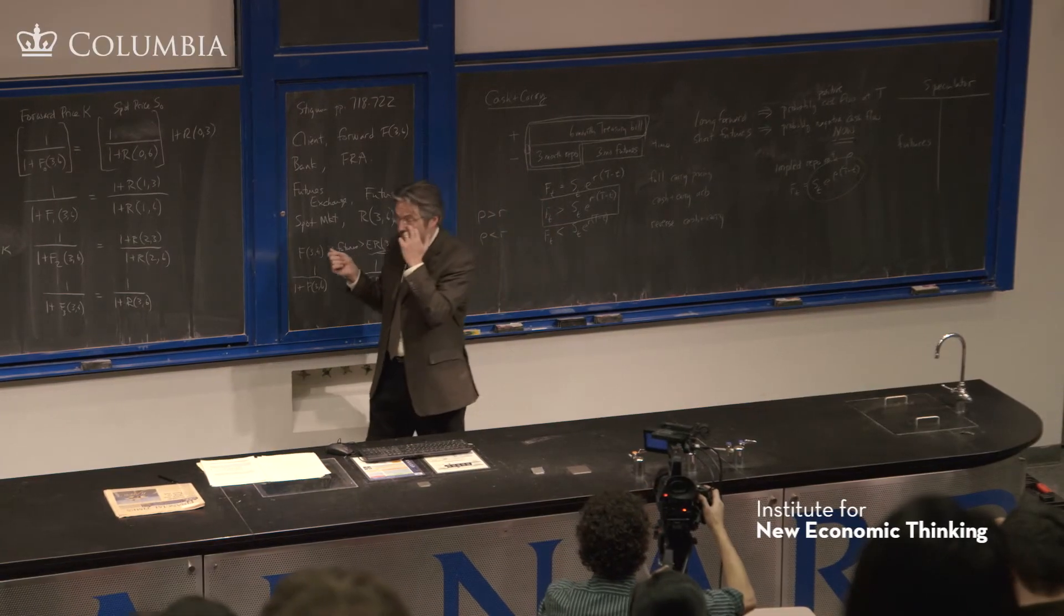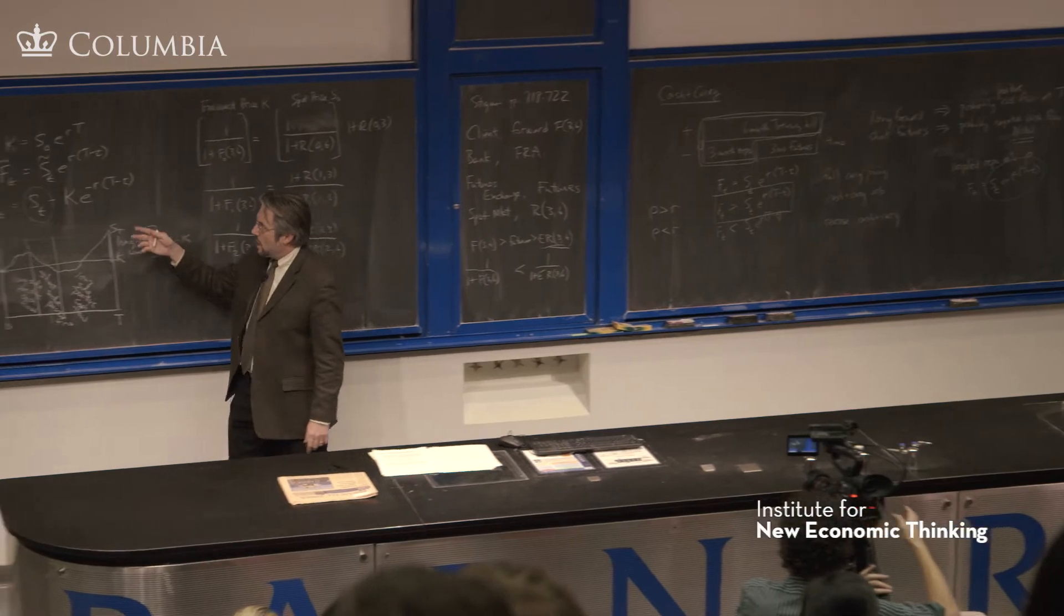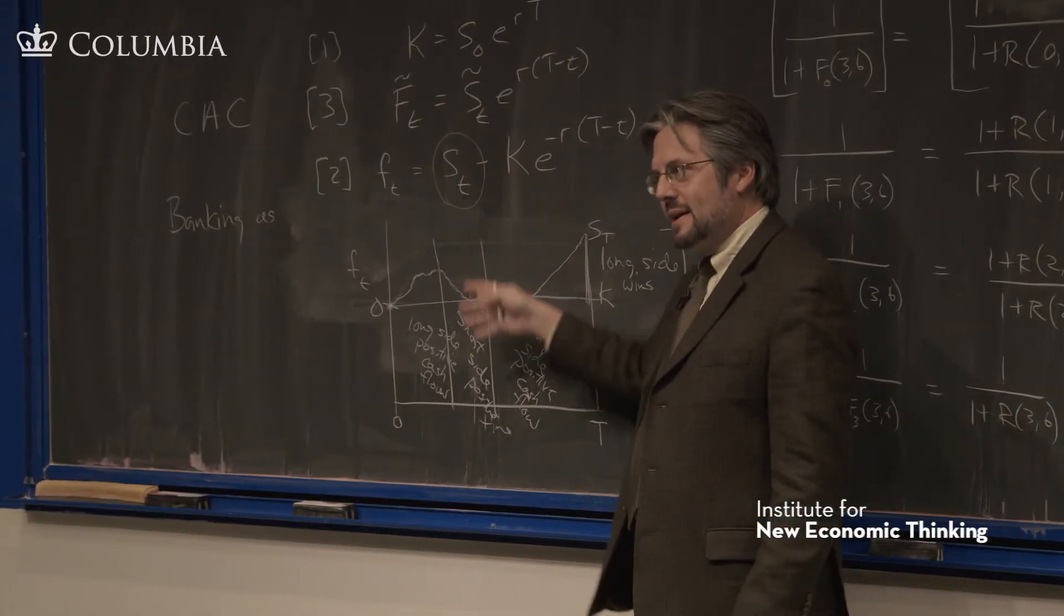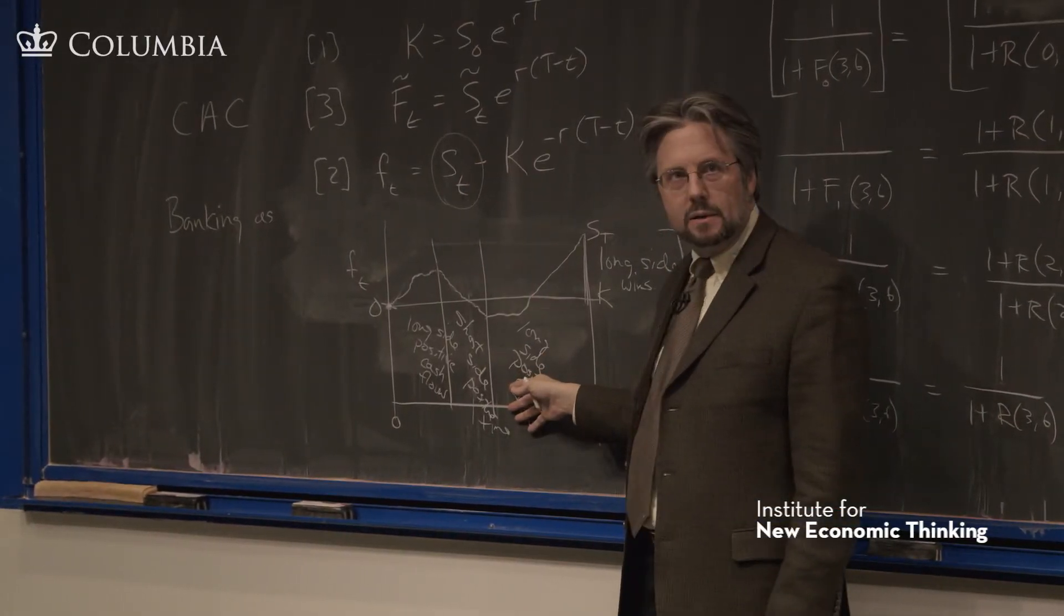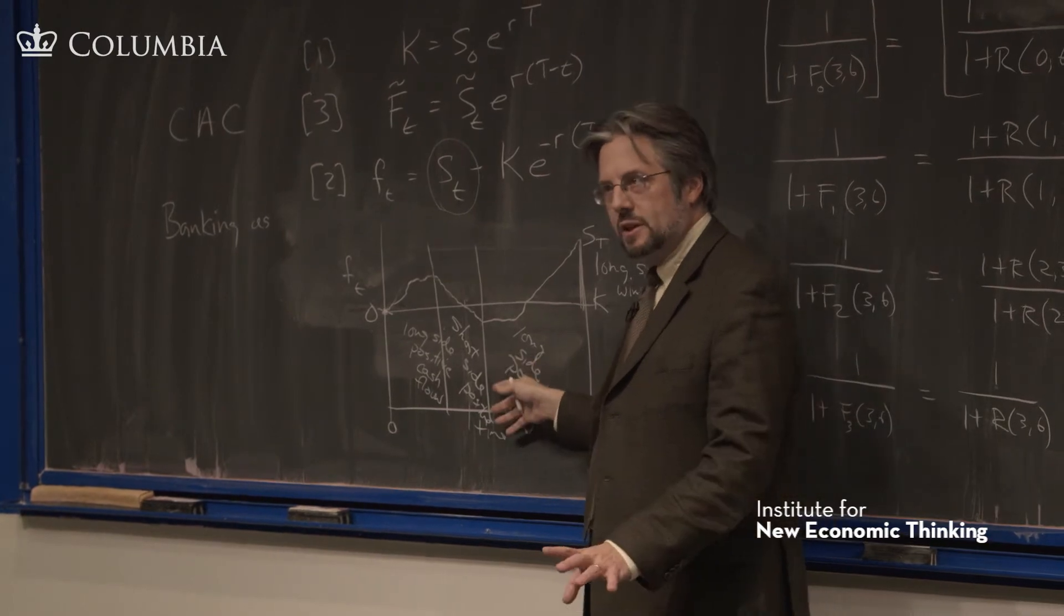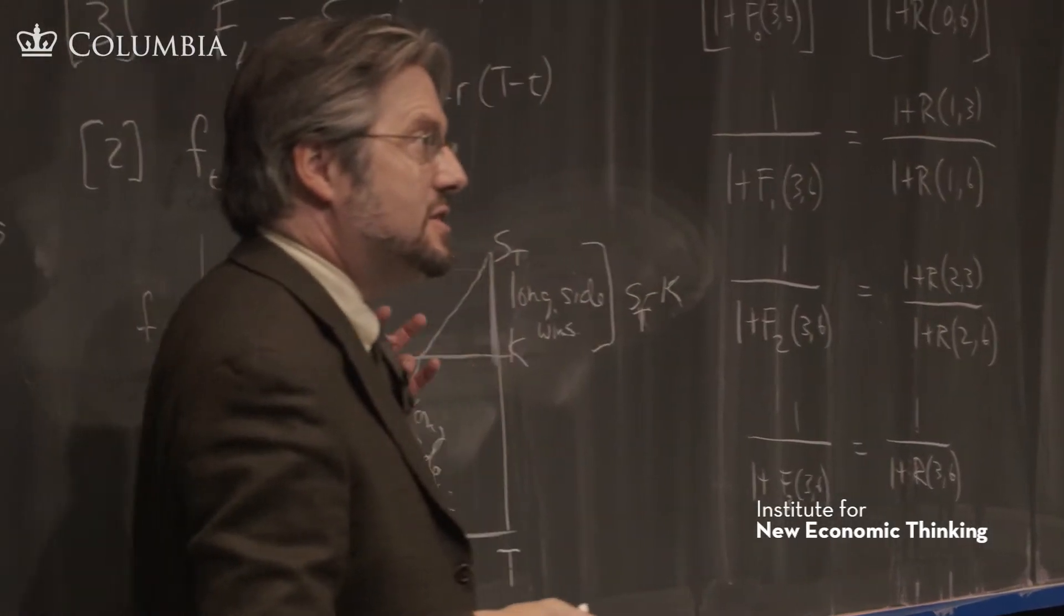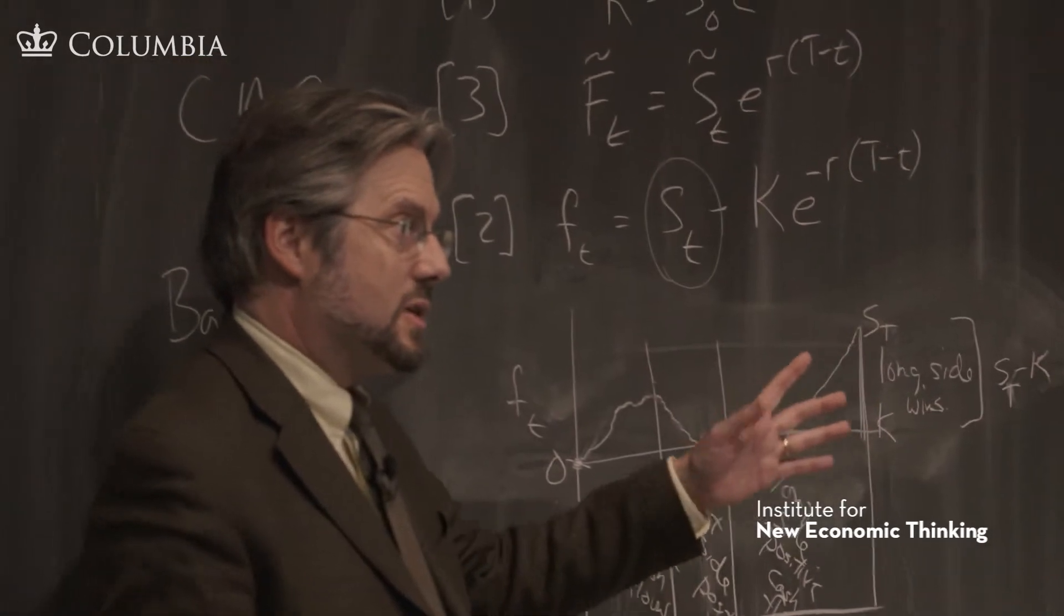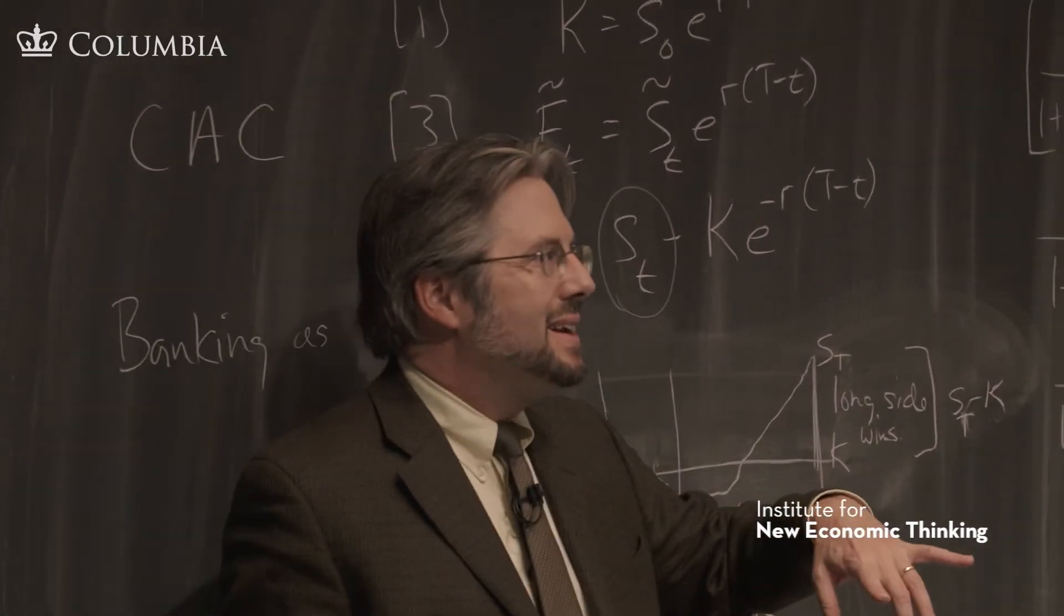So from their point of view, the price fluctuations are just equal and opposite of some fluctuation in the forward market. The value fluctuations are, so they're hedged in that sense in terms of value fluctuation just by construction.